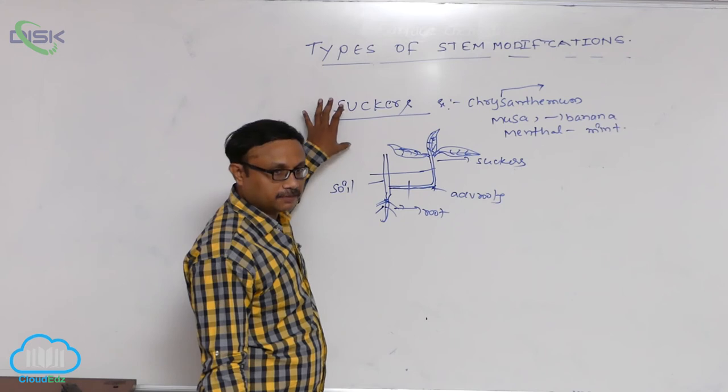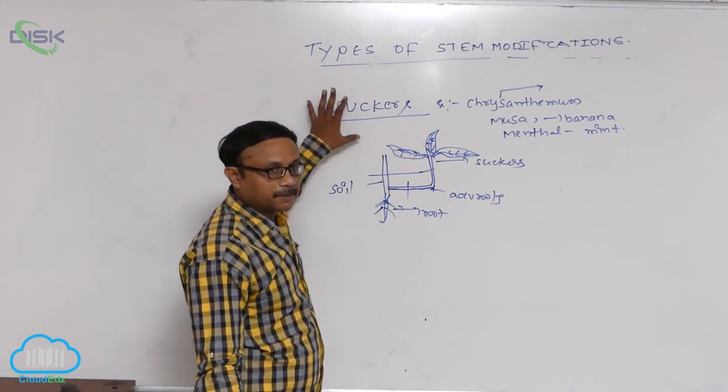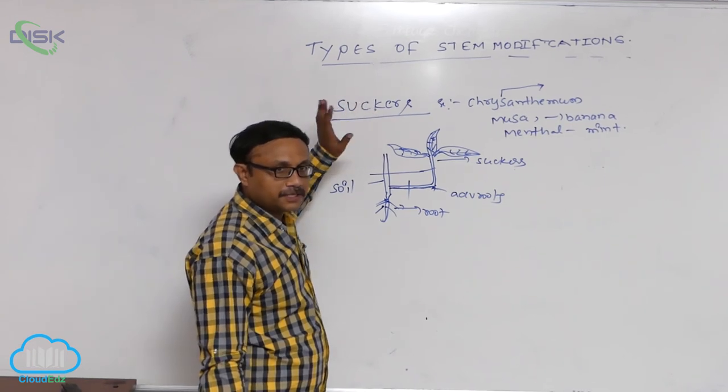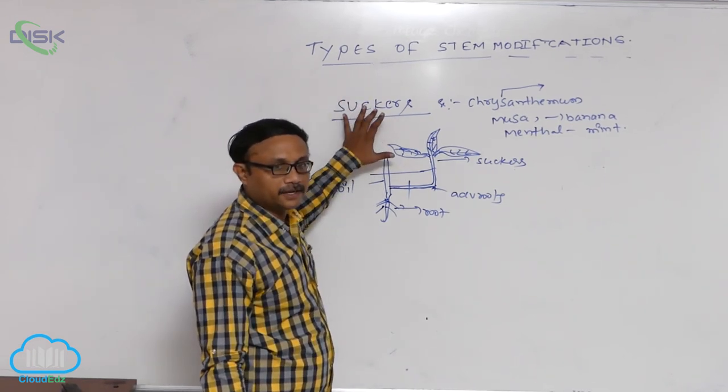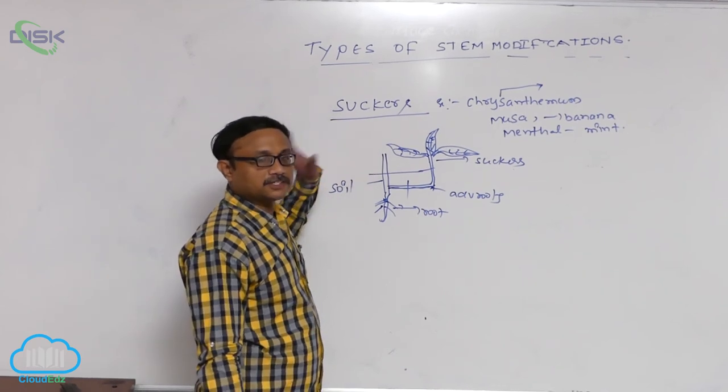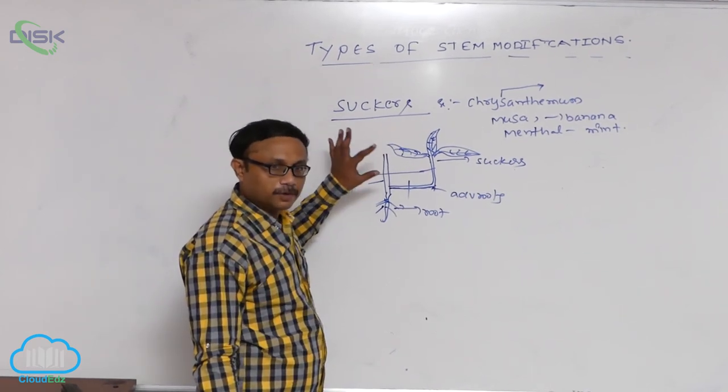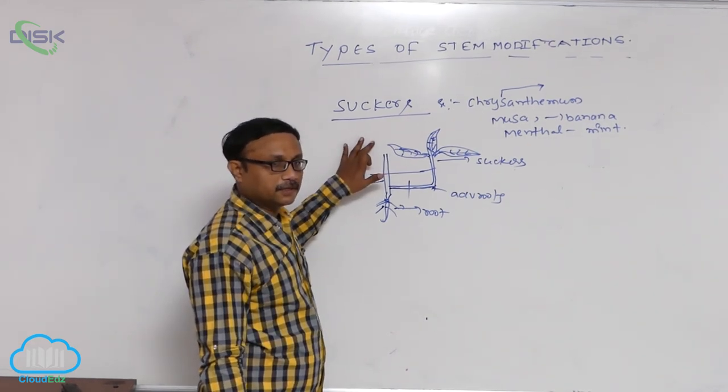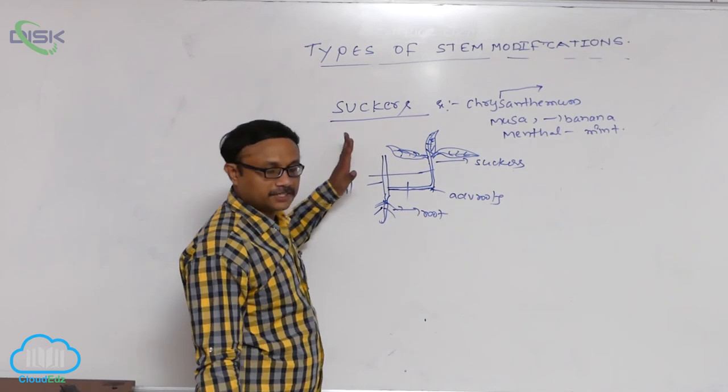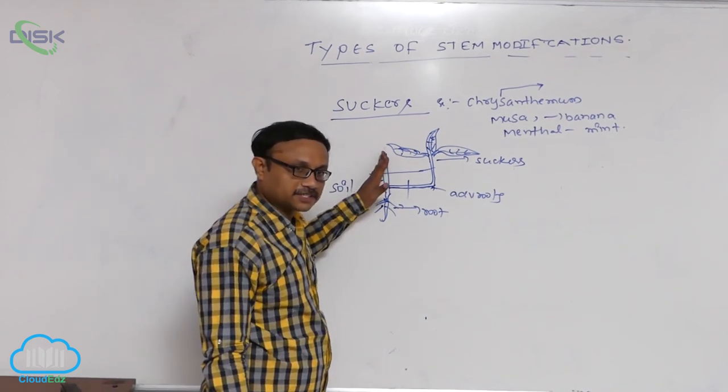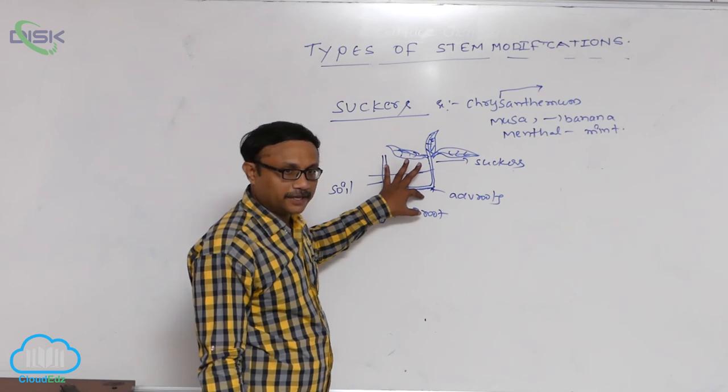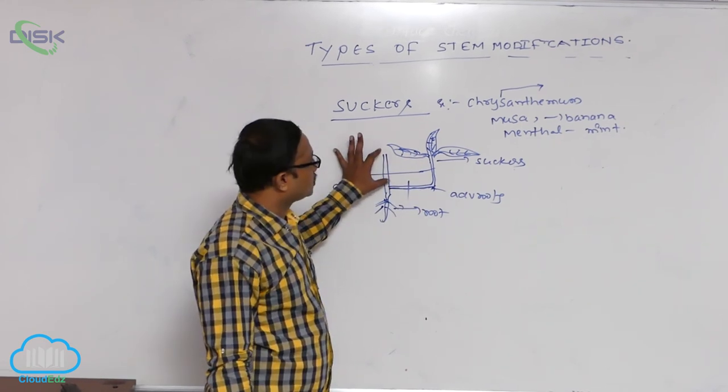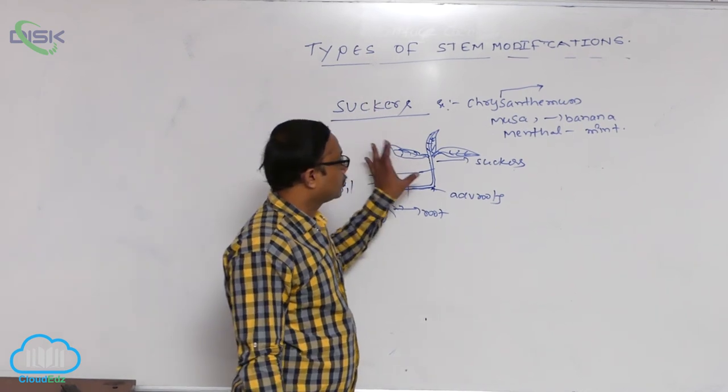In all stem modifications we observe that in aerial stem modification, bulb. Complete all stem modification, how many stem modifications participate in vegetative reproduction process? For example, you take that aerial stem modification, only bulbils participate in vegetative reproduction. Next one, all subaerial stem modifications and underground stem modifications participate in vegetative reproduction. Totally, basically it means nine types of stem modifications are participate in vegetative reproduction.